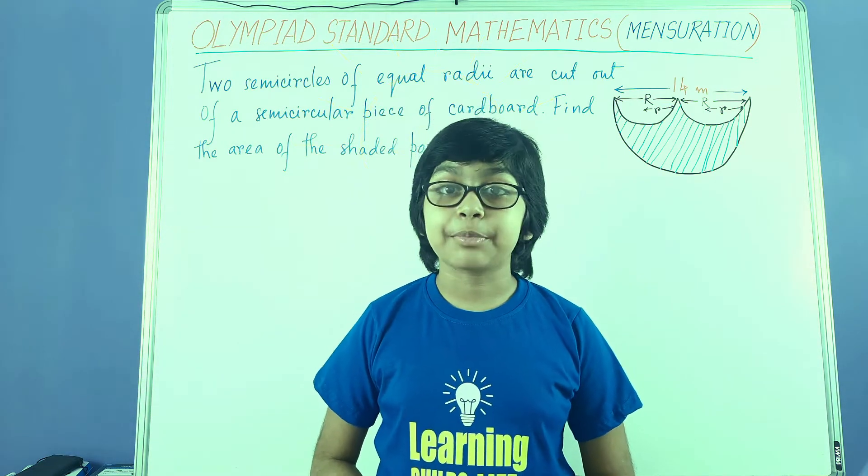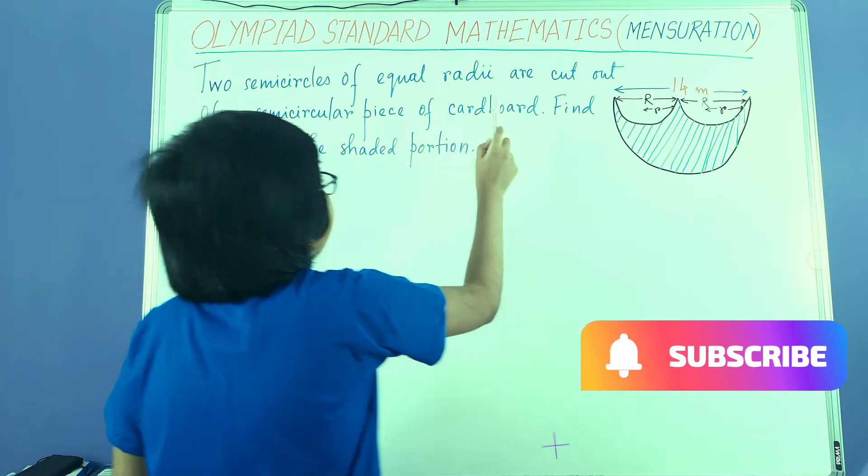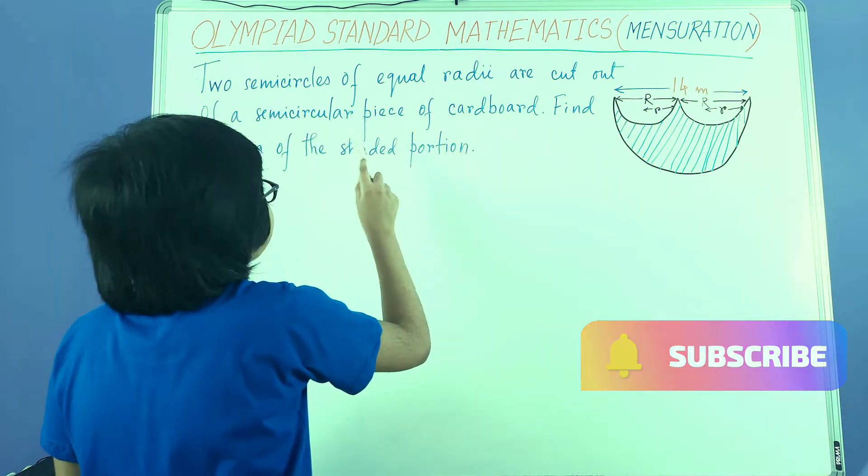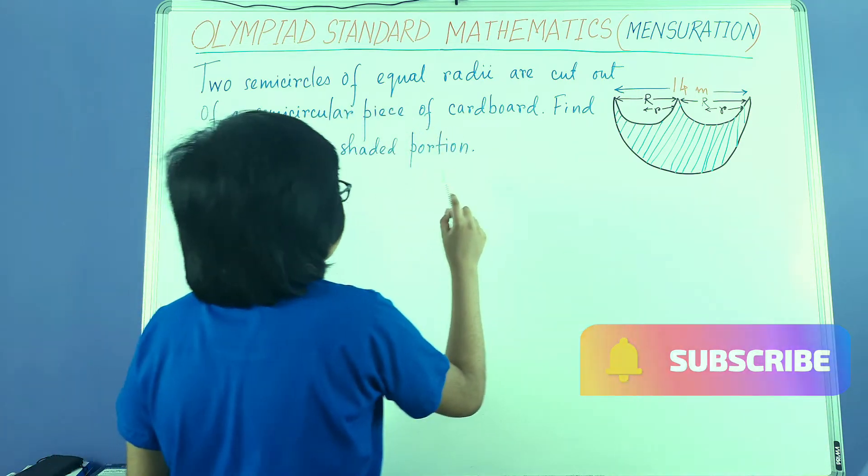I'm going to write this down before we can begin. Two semicircles of equal radii are cut out of a semicircular piece of cardboard. Find the area of the shaded portion.